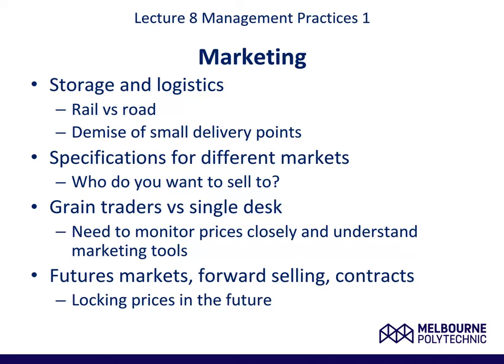Other considerations for marketing are storage and logistics. Australia is a large country and it is very expensive to transport on road, so you need to consider other transports such as rail and boat. The demise of small delivery points — more and more small delivery points have closed down, so the distance between each delivery point is greater, and this will impact on costs. Different markets have different specifications, so what do you want to sell and who do you want to sell it to? Grain traders versus single desk need to monitor prices closely and understand marketing tools. And then there is the futures market — this is where you forward sell, that is you sell the crop before it's ready and undertake a legal contract. You are locking in prices but also locking in a quality and a productivity of that quality.